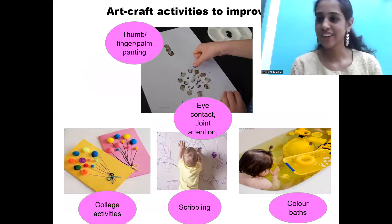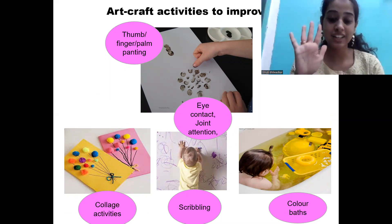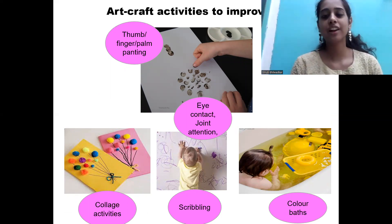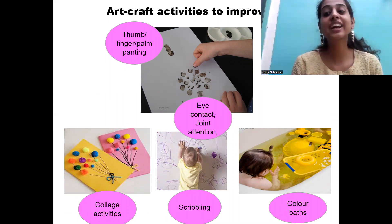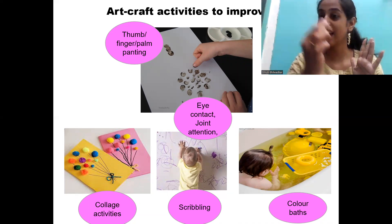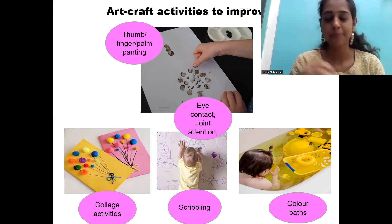Our favourite activity is art and craft — thumb painting and finger printing. These activities help develop eye contact and joint attention. Children are very interested in color activities, and removing gum from their hands and scribbling on paper is also engaging.